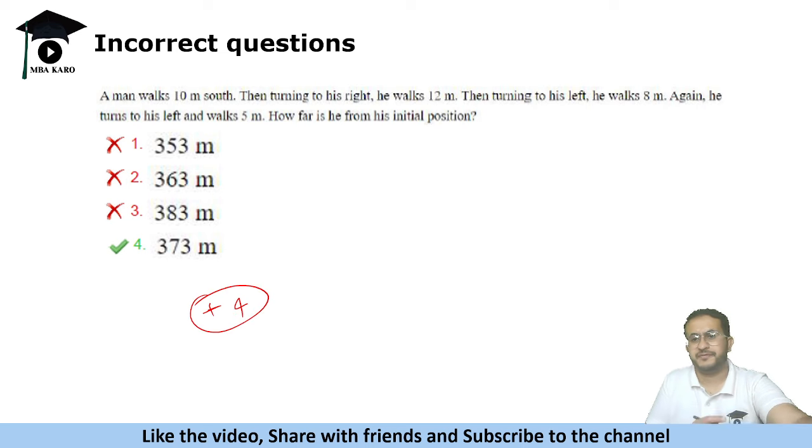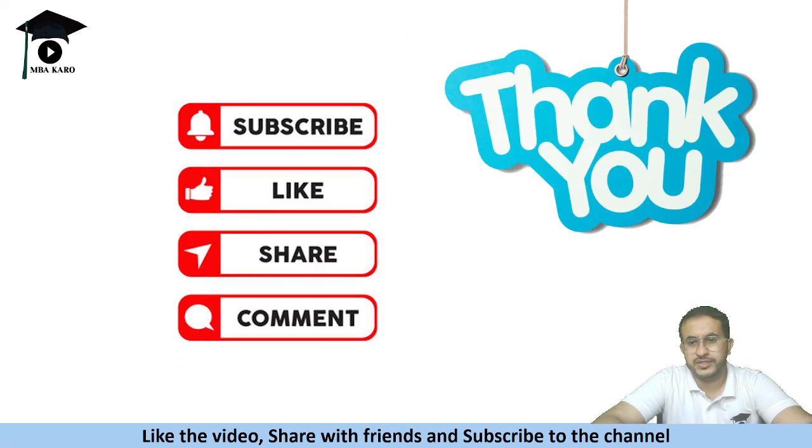They've been doing this previously also. If there were issues in the questions, they used to give marks for those incorrect questions. So plus four for this question, and that was the only mistake. Unlike previous years, there used to be more mistakes. So four marks and then sectional cutoffs could play a role this time.